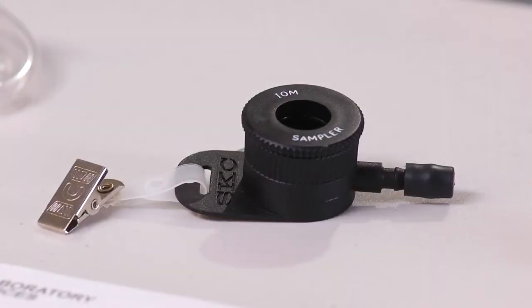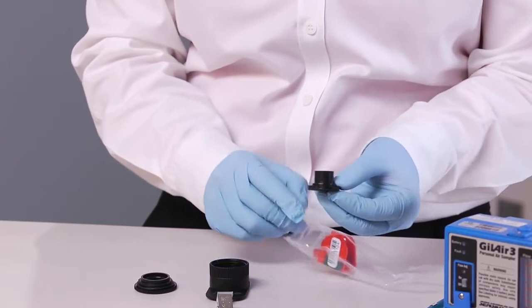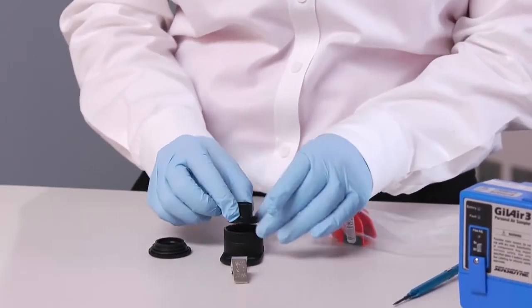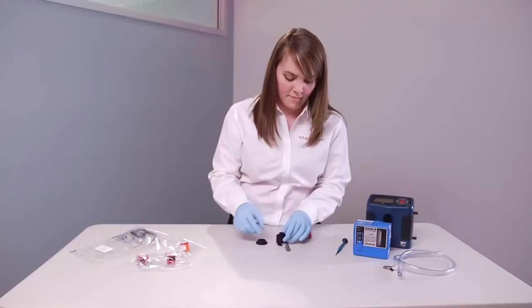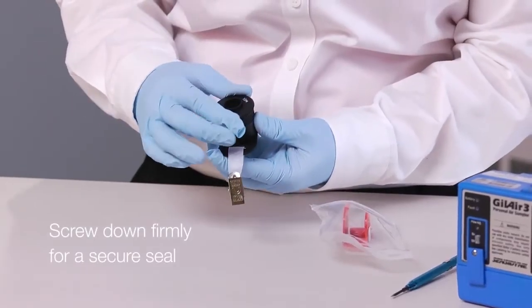You can also label the back of the IOM sampling head to ensure cassettes are not mixed after sampling. Remove the protective cap and place the cassette into the IOM sampler and replace the faceplate, screwing it down firmly for a secure seal.